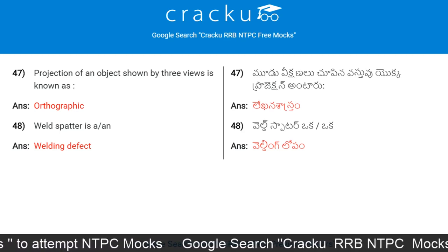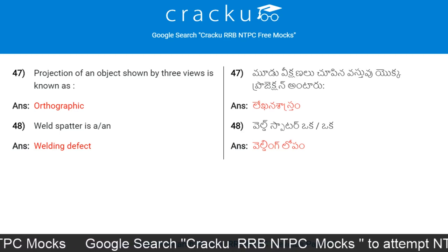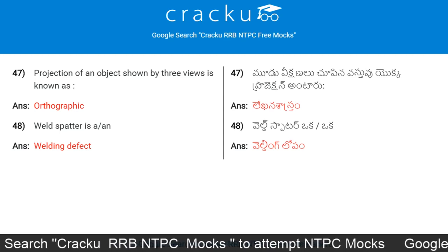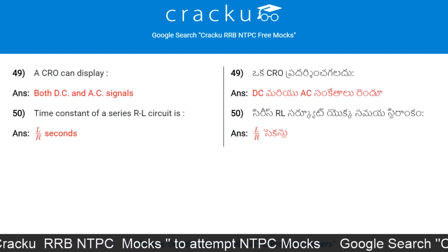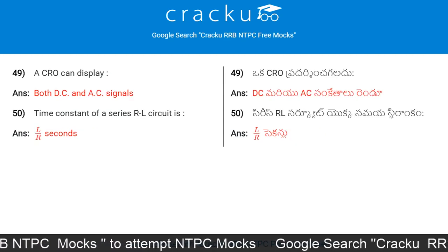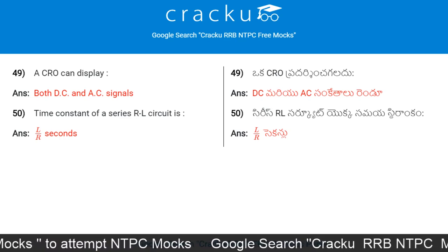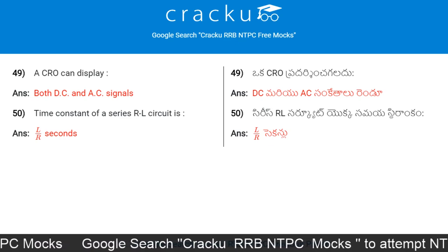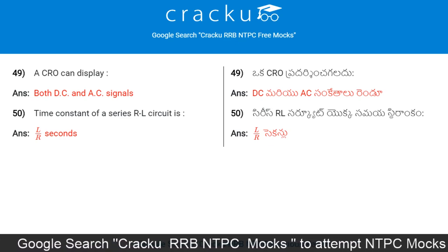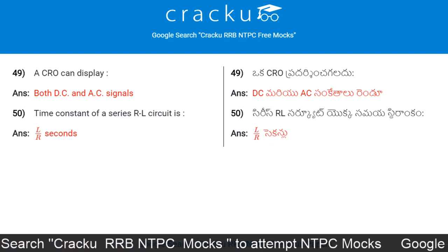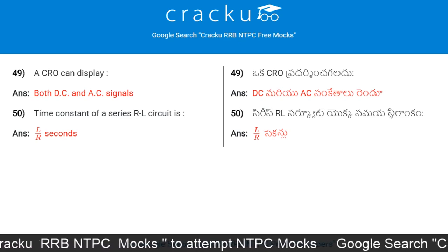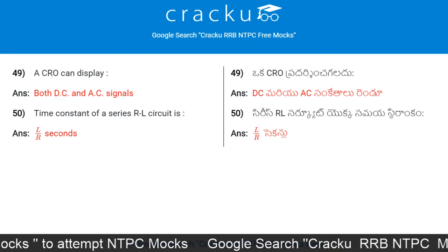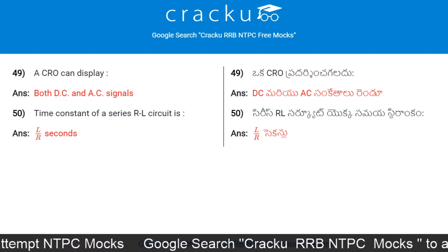Weld spatter is a welding defect. A CRO (cathode ray oscilloscope) can display both direct current and alternating current signals. The time constant of a series RL circuit is L/R seconds.